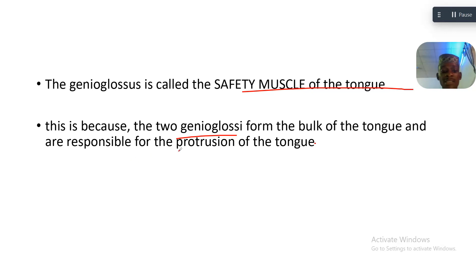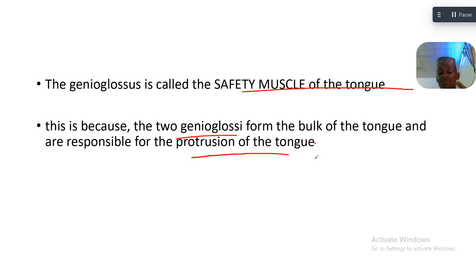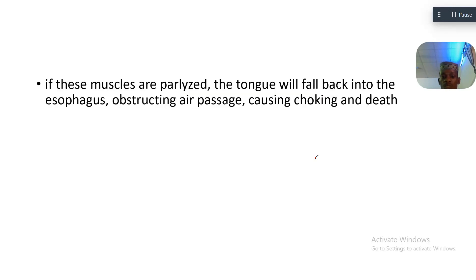They are responsible for the protrusion of the tongue — responsible for taking your tongue out. That is the function of the genioglossus. Now, if these muscles are paralyzed, of course you know that your tongue — you cannot put your tongue out again.